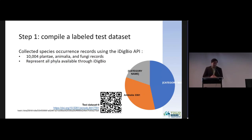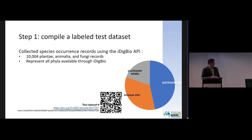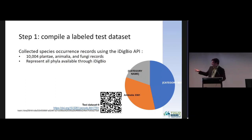The first of three steps was to compile a labeled test dataset. We needed a reference point to say whether ChatGPT is right or wrong. We collected species records using iDigBio, sampling records somewhat evenly across the three kingdoms — Plantae, Animalia, and Fungi — ending up with about 10,000 records after cleaning and filtering. These records come from all phyla available in iDigBio for those three kingdoms. About half the records are plants, about a third are animals, and about 20% are fungi.